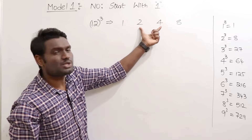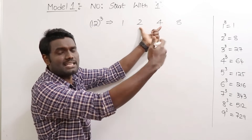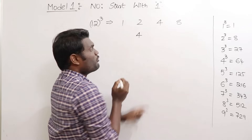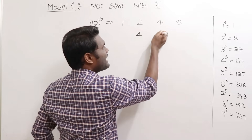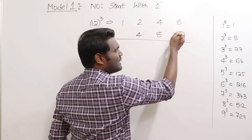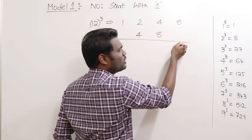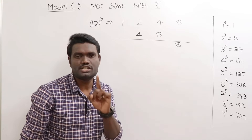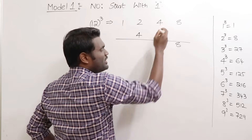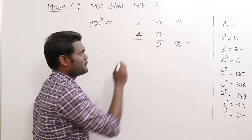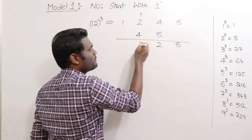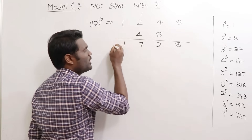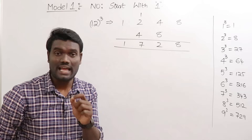Leave the first number and last number, and double the middle numbers: double 2 is 4, double 4 is 8. Now add: 8 plus 0 is 8; 4 plus 8 is 12, write 2 and carry 1; 4 plus 2 is 6, plus 1 carry is 7; 1 plus 0 is 1. So 12 cubed equals 1728.